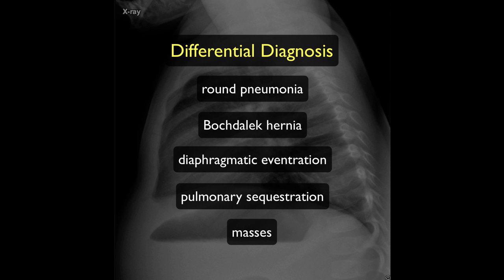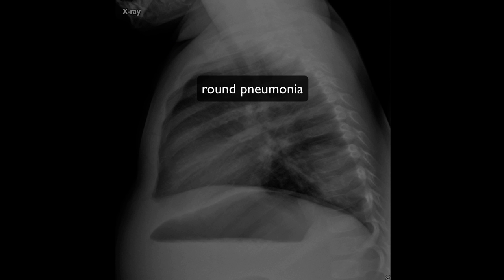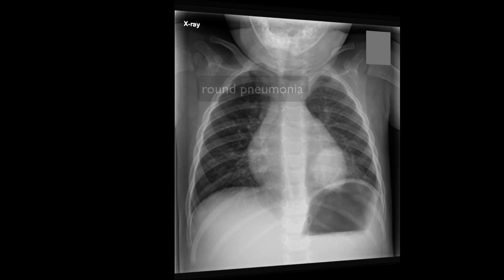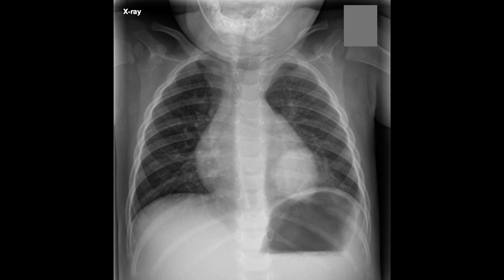However, given the history of cough and breathlessness, the most likely differential here is round pneumonia. Looking back at the AP radiograph, you can see air bronchograms and a slightly irregular outline.